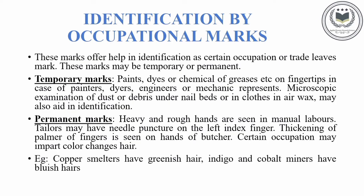Identification by occupational marks: occupational marks offer help in identification as certain occupations or trades leave marks. Generally, these marks may be categorized into two types — temporary marks and permanent marks. Temporary marks are mainly caused due to paint, dyes, chemicals, or grease on the fingertips, as seen in painters, dye engineers, or mechanics. Permanent marks include heavy and rough hands seen in manual laborers, and tailors may have needle punctures on their left index finger, caused by doing the same type of work on a regular basis.